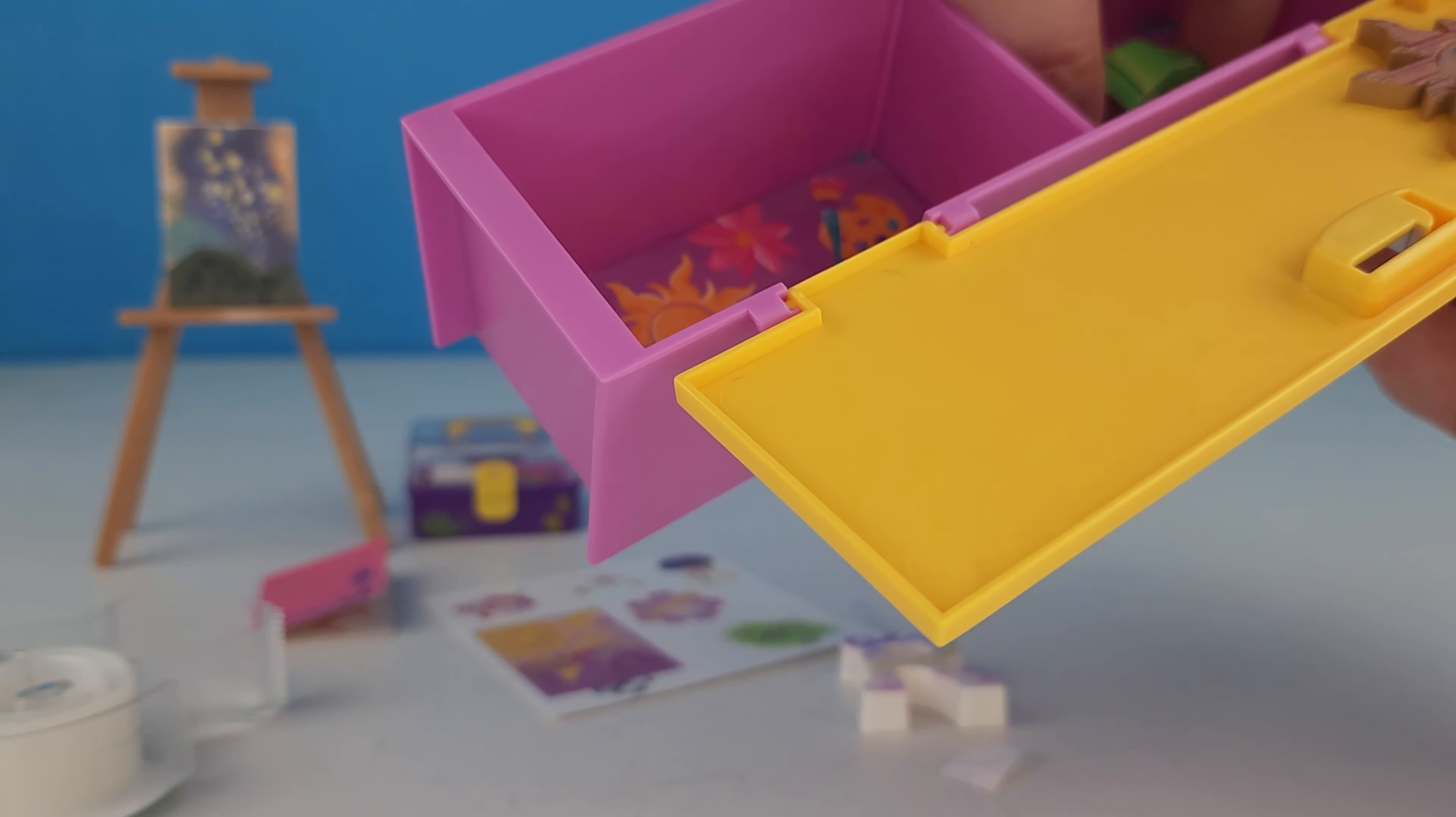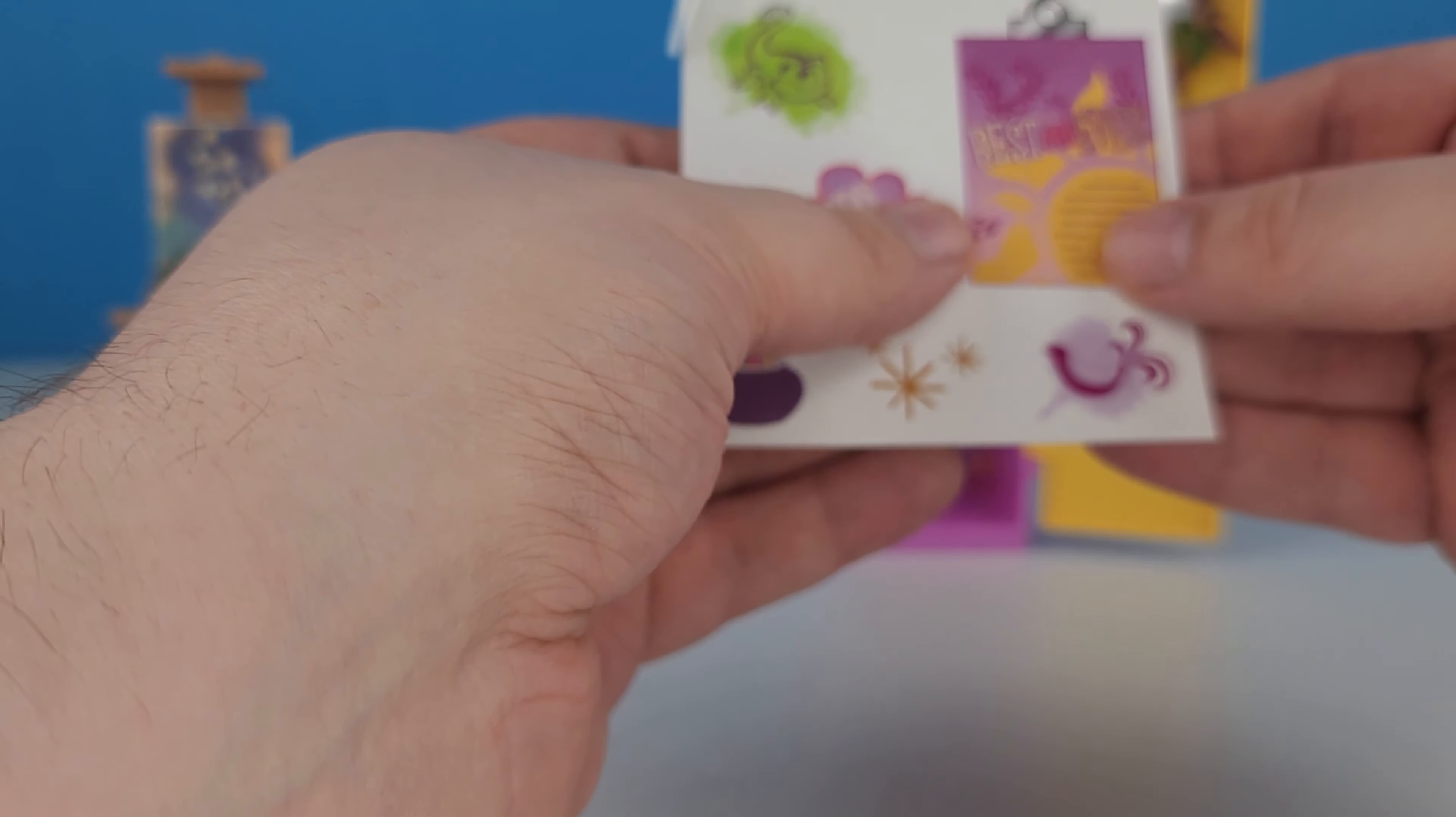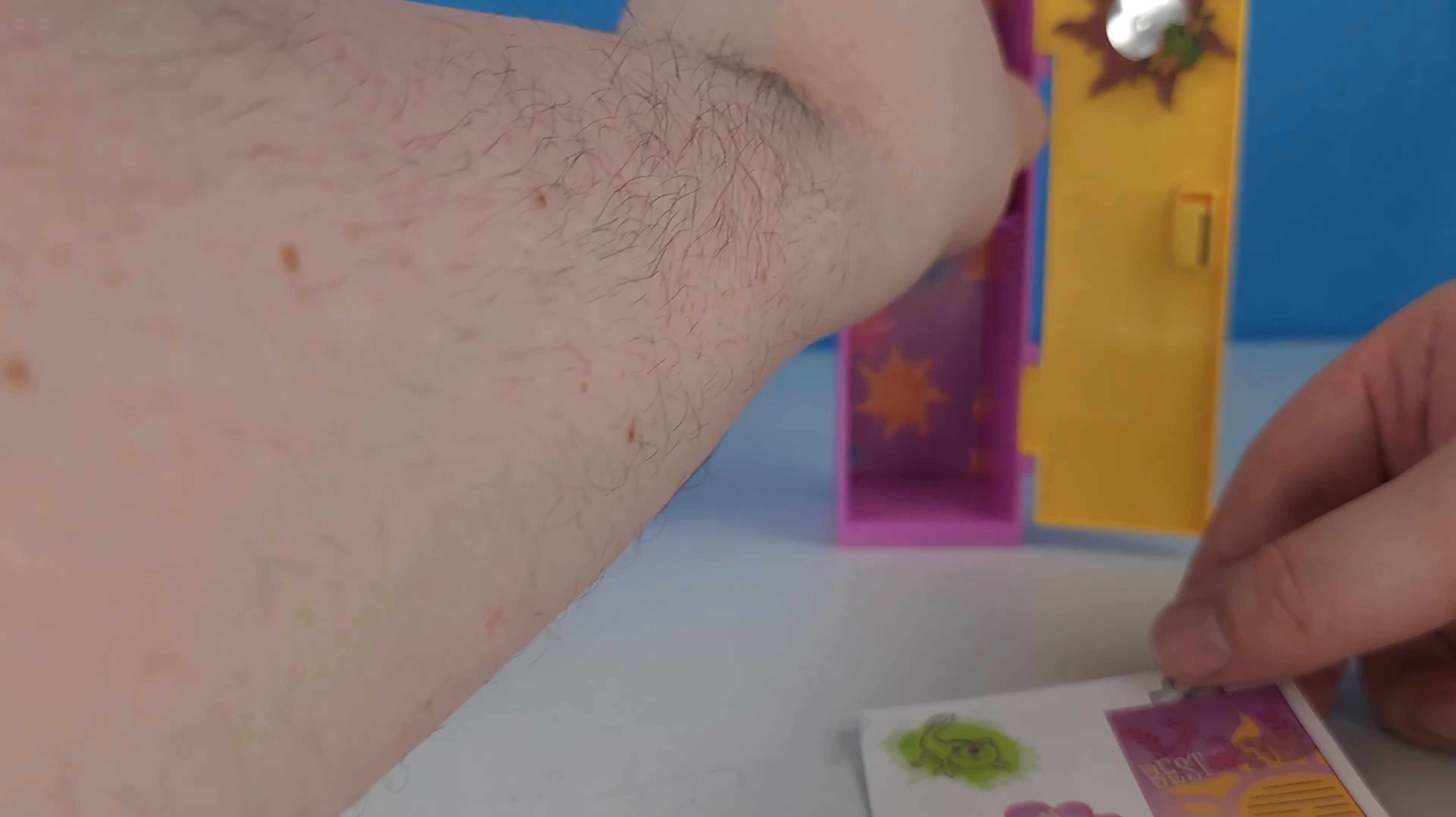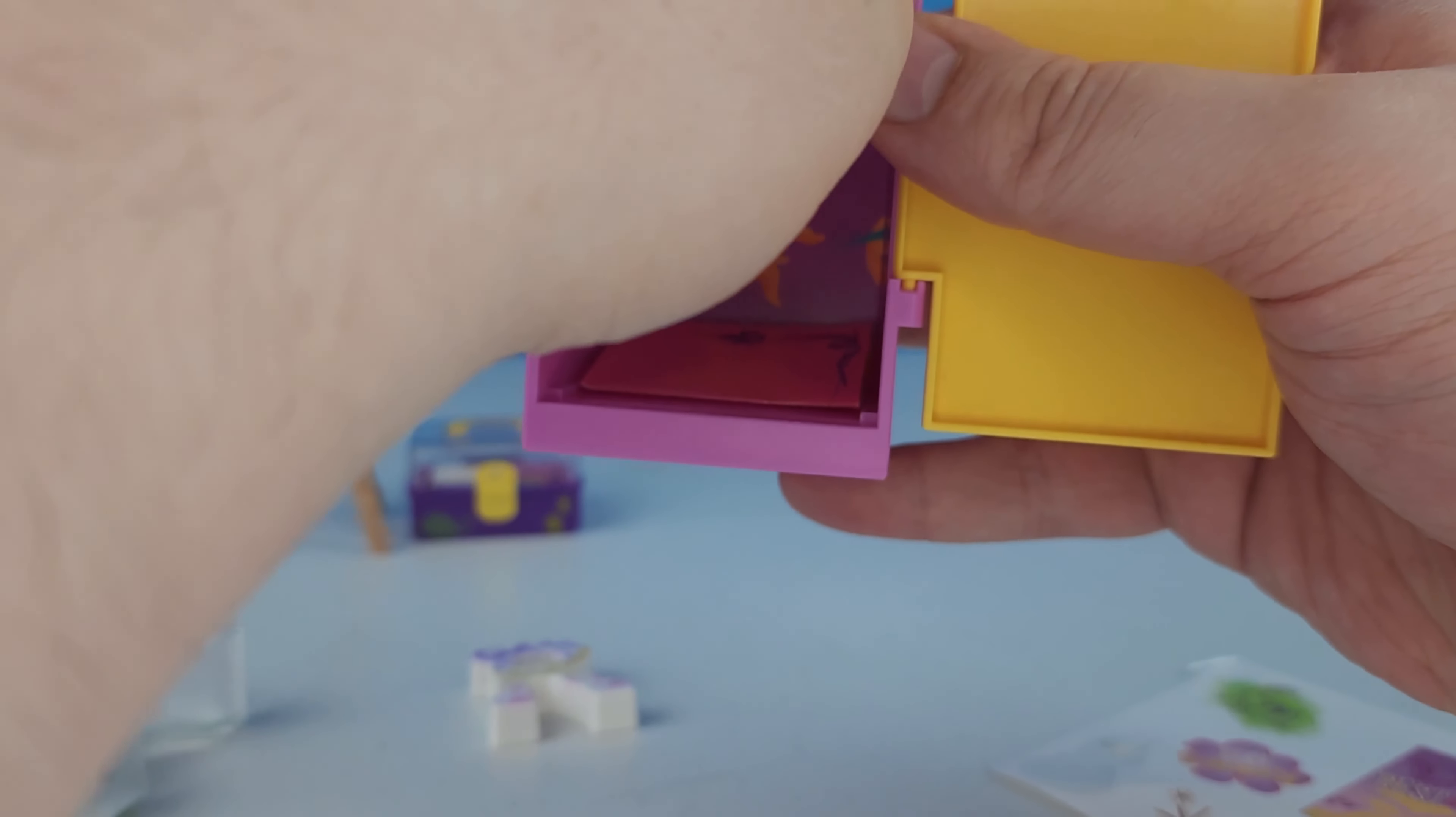So we'll just go ahead and put that right in the back of the locker like that, put our R in there, put our notebook in there. We got some cool stickers so it looks like checklist, a little Pascal, stay golden, some little art supplies. I think these are pretty cute so maybe we'll go ahead and put the book and maybe we'll take this art supplies that we see right here and put it in her locker like it's in the back of her locker.